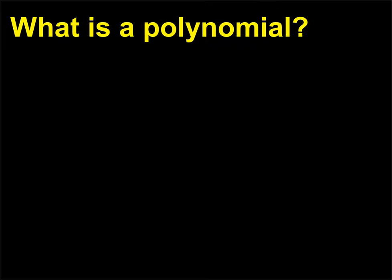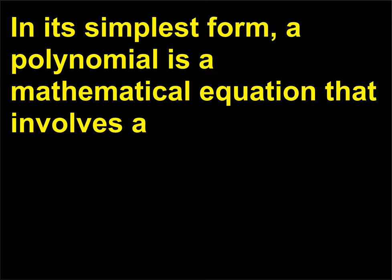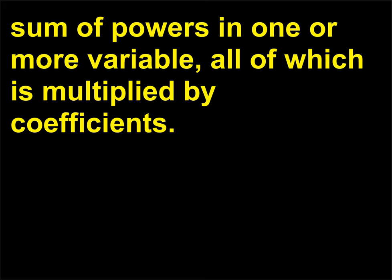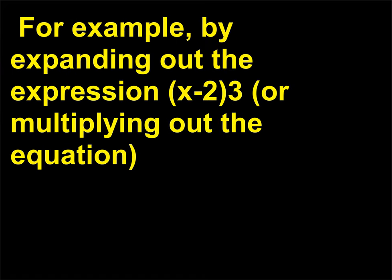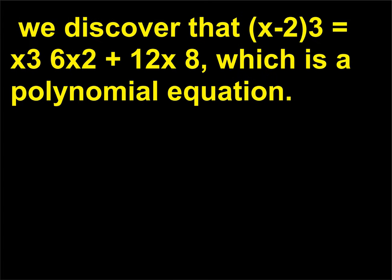What is a polynomial? In its simplest form, a polynomial is a mathematical equation that involves a sum of powers in one or more variables, all of which is multiplied by coefficients. In such equations, variables and numbers on both sides of the equal sign are considered polynomials. For example, by expanding out the expression (x−2)^3, or multiplying out the equation, we discover that (x−2)^3 = x^3 − 6x^2 + 12x − 8, which is a polynomial equation.